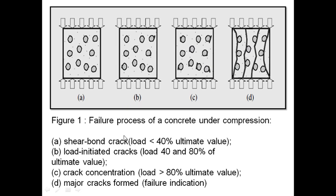Figure 1 shows failure process of concrete under compression. A relates to bond crack when load is less than 40% of ultimate load. Figure B relates to load-initiated cracks when load is between 40 and 80% of ultimate value. Figure C is in connection with crack concentration when load is more than 80% of failure value. Figure D relates to failure indication, that is major cracks are formed.